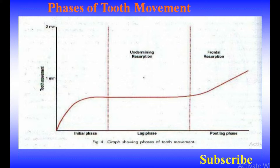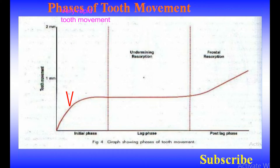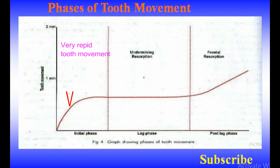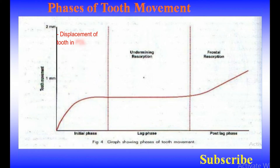Studies have shown that tooth movement progresses through three stages: the initial phase, the lag phase, and the post-lag phase. During the initial phase, very rapid tooth movement is observed over a short distance, and then stops. This movement represents displacement of the tooth in the periodontal membrane space.